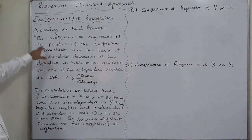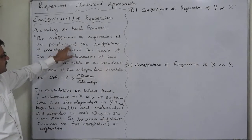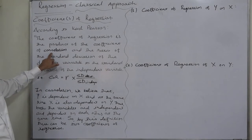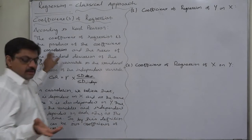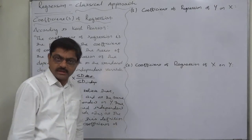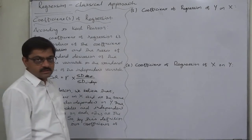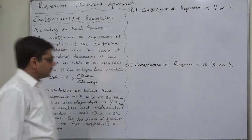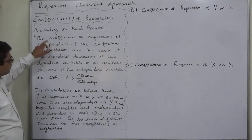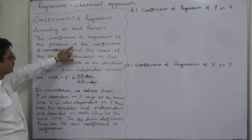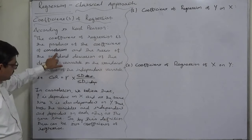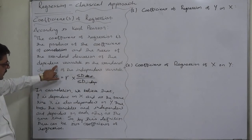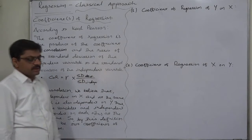According to Carl Pearson, the coefficient of regression is the product — that means multiplication — of the coefficient of correlation. As we all know, the coefficient of correlation is also a great contribution from Carl Pearson. And before that, he had already contributed the concepts of variance as well as standard deviations. So, according to Carl Pearson, the coefficient of regression is the product of the coefficient of correlation and the ratio of the standard deviation of the dependent variable to the standard deviation of the independent variable.